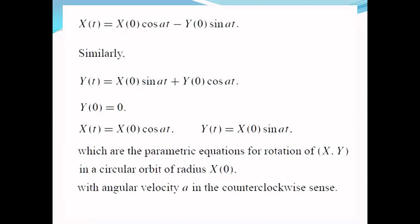Which are the parametric equations of the rotation of the vector in a circular orbit with radius X(0) and angular velocity a in the counterclockwise sense. So, this is the solution for our problem on Earth's nutation. Thank you.